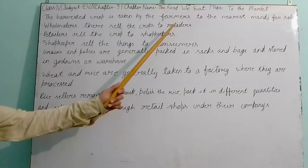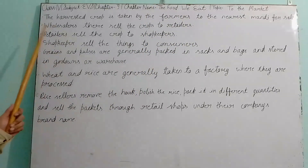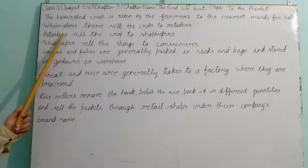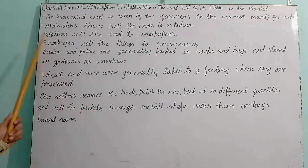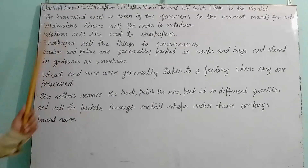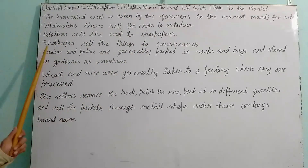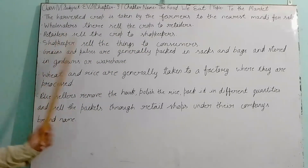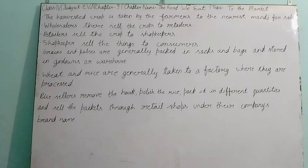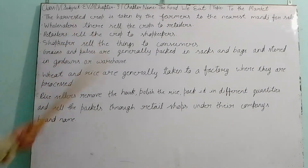To summarize: grocery crops are taken by the farmers to the mandi, where wholesalers sell it to the retailers, retailers sell it to the shopkeepers, and shopkeepers sell it to us. Through this process we get the food and processed materials for our consumption and requirements. These are the topics for today — thank you.